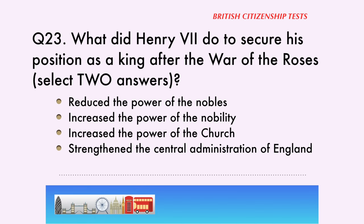Question 23. What did Henry VII do to secure his position as king after the War of the Roses? Reduce the power of the nobles, increase the power of the nobility, increase the power of the church, strengthen the central administration of England. The correct answer is: strengthen the central administration of England and reduce the power of the nobles.